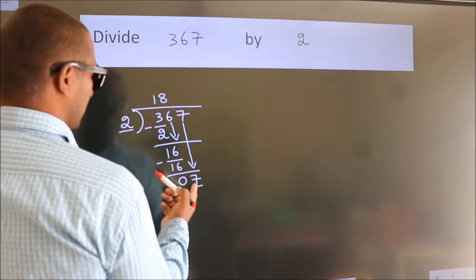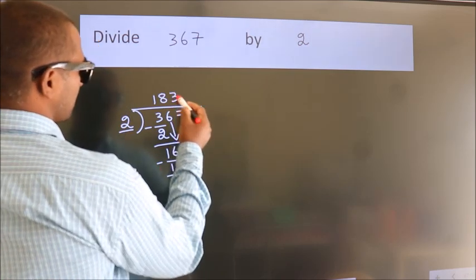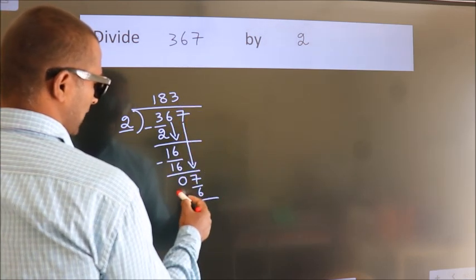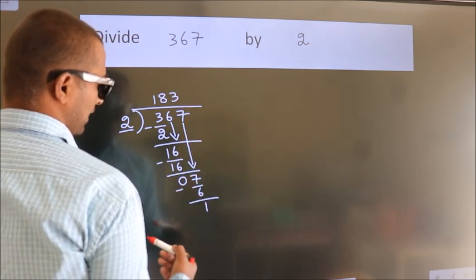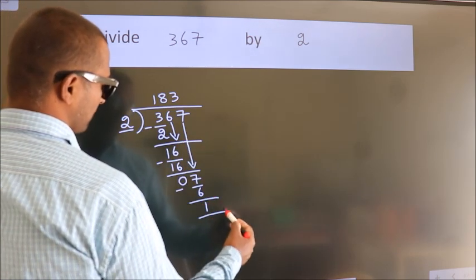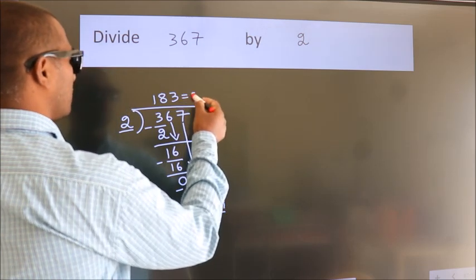A number close to 7 in 2 table is 2 3s, 6. Now we subtract. We get 1. No more numbers to bring it down. So we stop here. This is our remainder. This is our quotient.